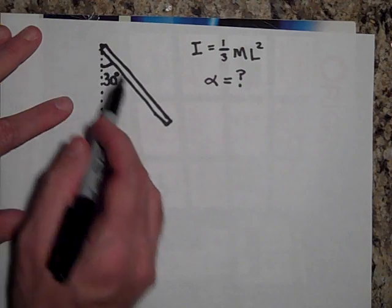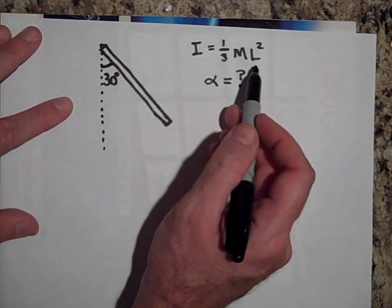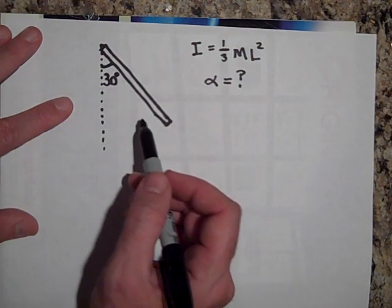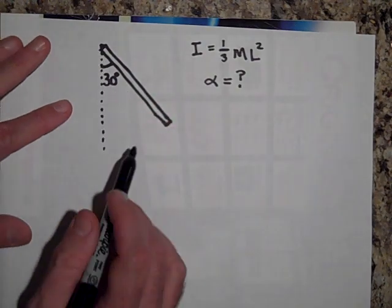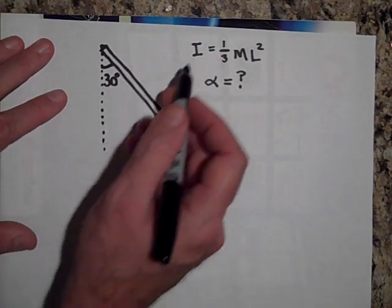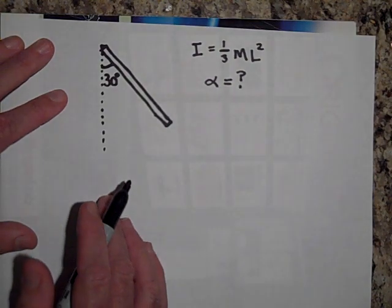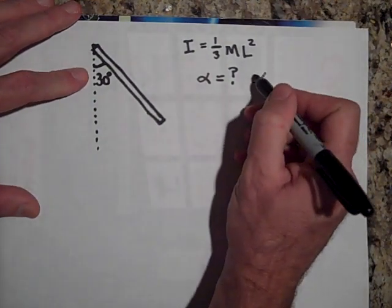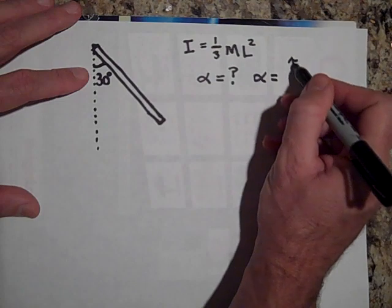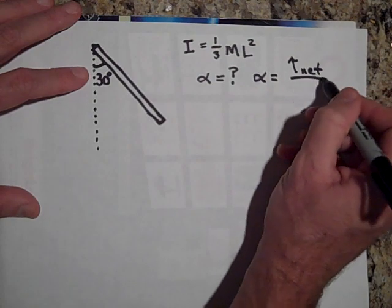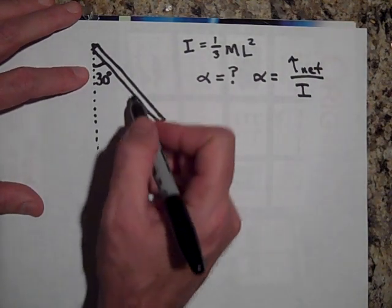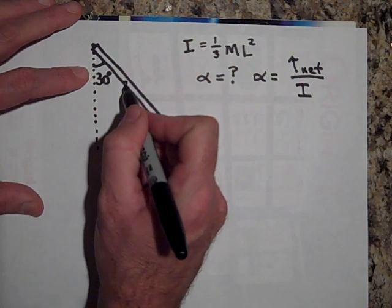Can you give me the acceleration of this rod? This rod has an I of one-third ML squared and it's 30 degrees with the vertical. And it's going to swing down, but right in this position what is the angular acceleration of the rod? Okay, go ahead and pause and try and find it. Okay, the angular acceleration of this rod is the net torque all over I.